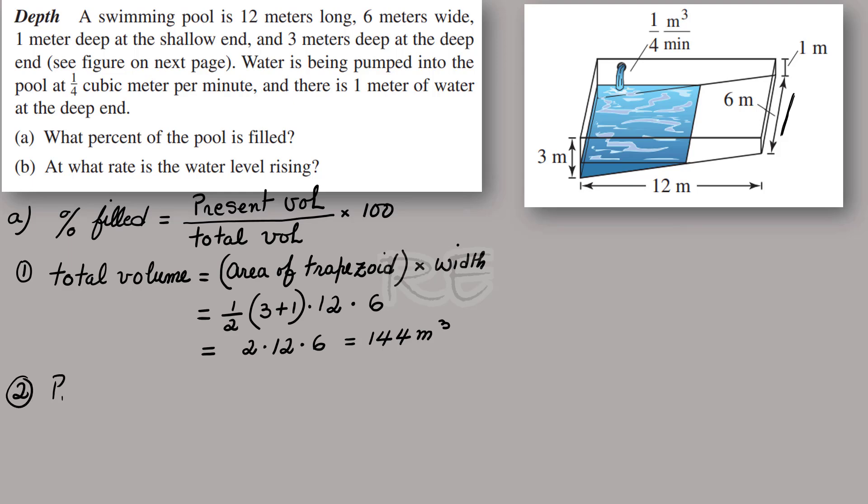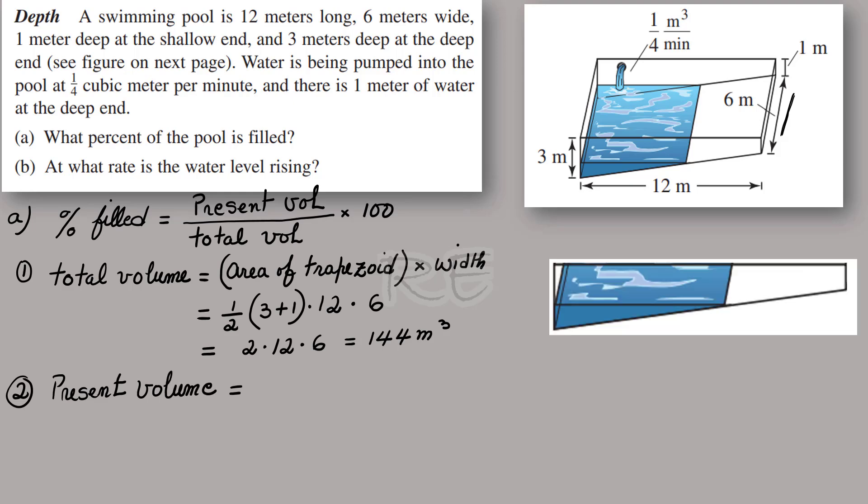For the present volume, the front is a triangle. So it's going to be the area of the triangle stacked vertically along the width, multiplied by the width.